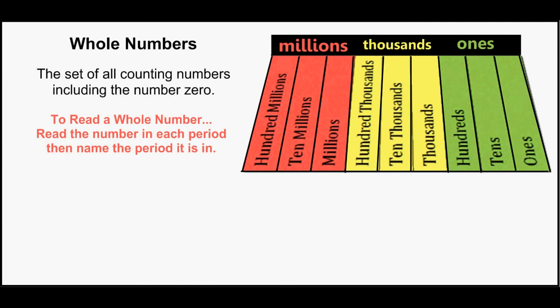Each period is separated into three columns. The ones, the tens, and the hundreds make up the ones period.